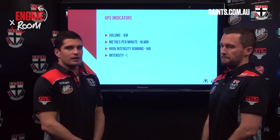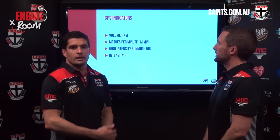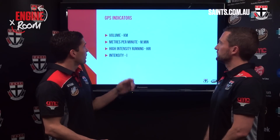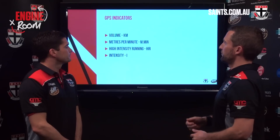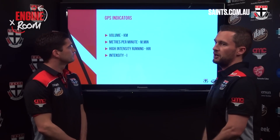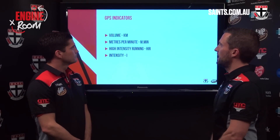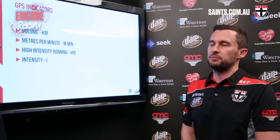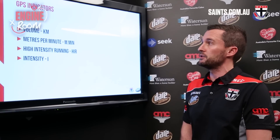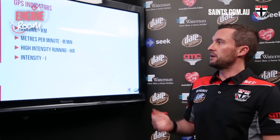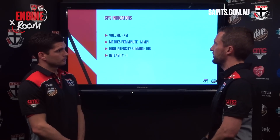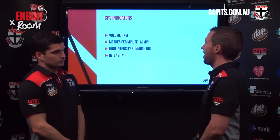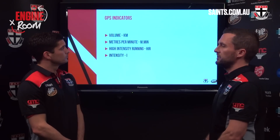Now let's look at some of the data that we get judged on week to week, and why we wear our GPS devices. We look at four measures. First is volume — the total meterage you get for the game. Someone like Joey and other elite midfielders will get between 15 and 16 kilometres a game, which is very high. Second is meters per minute, which is your work rate — how much ground you cover per minute when you're on the ground. Elite midfielders will get around 150-plus meters a minute.